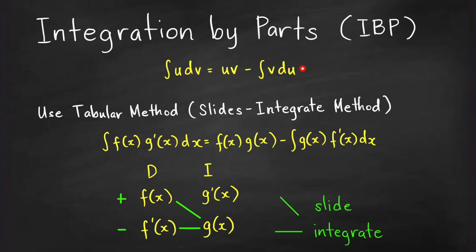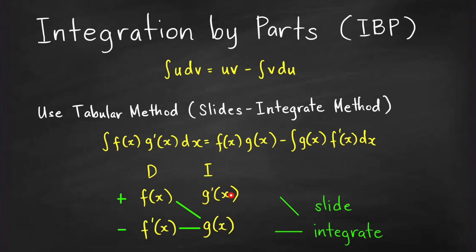Take note that we can write the IBP formula as the integral of f(x)·g′(x) dx equals UV minus the integral of V dU. In tabular form, the column labeled D means we take repeated derivatives of one function, and the column labeled I means we take repeated antiderivatives of the other function.